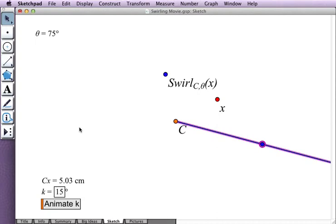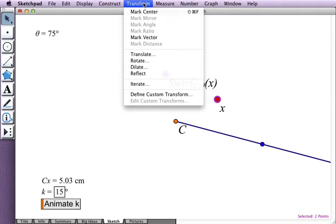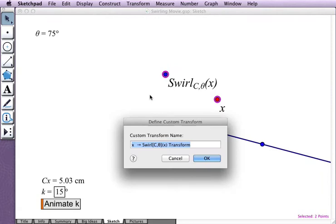And I select the two variables, and from the transform menu I choose define custom transform, which is the sketchpad command to define a function from two related points.